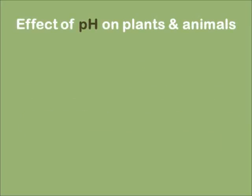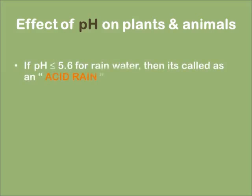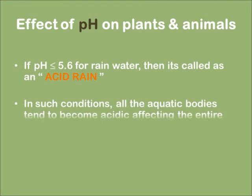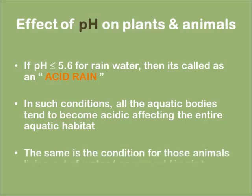The effect of pH on plants and animals. When pH is less than 5.6 for rainwater, then it is called acid rain. In such a condition, all the aquatic bodies will also become acidic, affecting the entire aquatic habitat. Indirectly, those creatures outside water will also be affected.